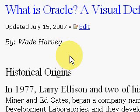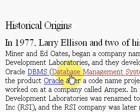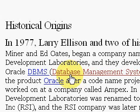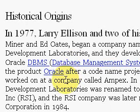What is Oracle? Back in 1977, Larry Ellison and a couple of his buddies, Bob Miner and Ed Oates, began a company called Software Development Laboratories. They developed the original DBMS — that's their claim to fame. They named it Oracle after a code name project they'd worked on for another company, and then in 1984 it became officially known as Oracle Corporation.